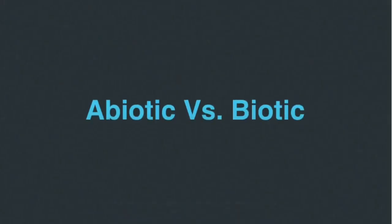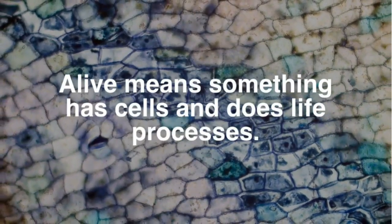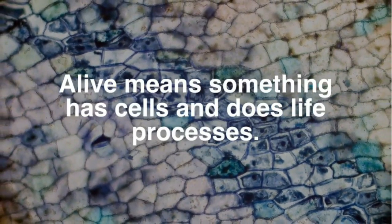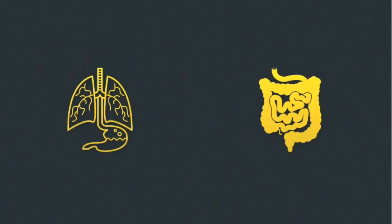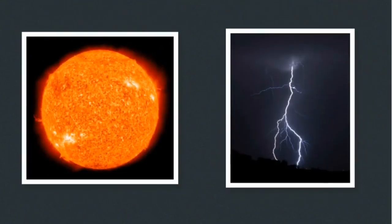Abiotic versus biotic — two very important science terms. Alive means something has cells and does life processes. Life processes are things like breathing and digesting food. Just because something has energy or moves doesn't mean that it's alive. This is a picture of the Sun and a picture of lightning. Neither of these things are alive — they have no cells and they do no life processes.